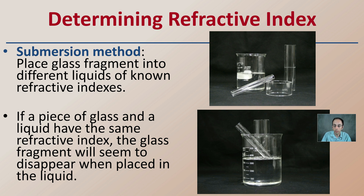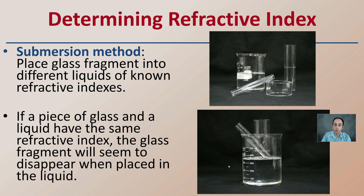Here is a prime example: we have a beaker where the liquid has the same refractive index as this column in the test tube, and we can see everything appears to disappear simply because of the same refractive index — they're disappearing because we don't have that difference between those two substances.